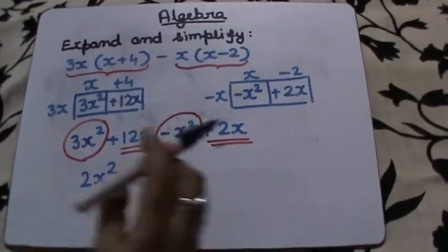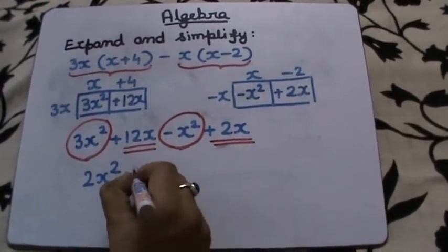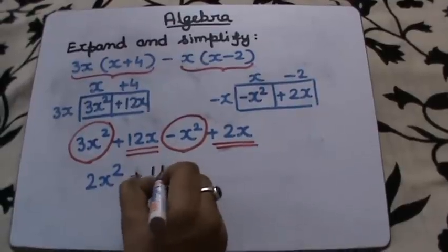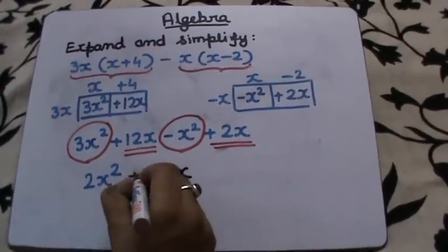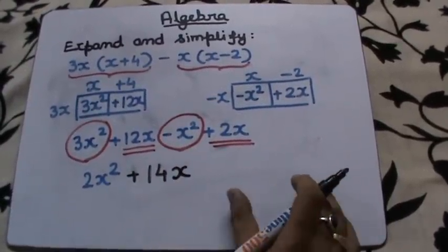So 12x plus 2x which gives me 14x. That's our final answer.